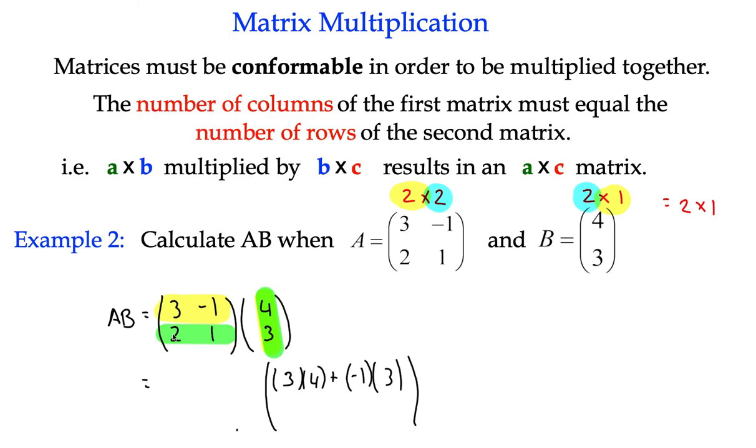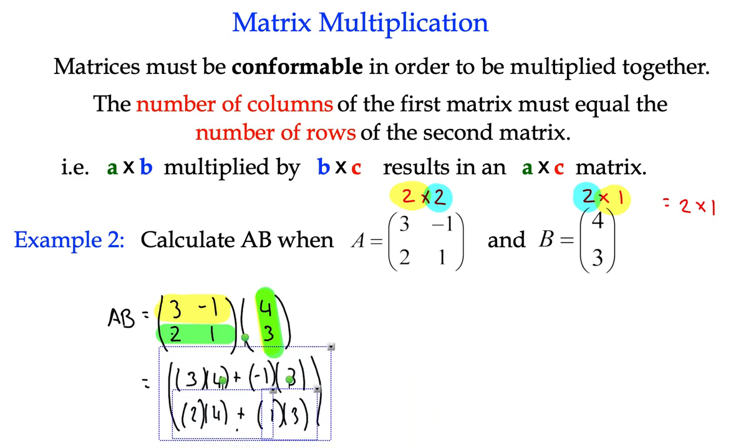So in other words, we're going to use 2 and 4, the first elements in each of those. We're going to do 2 times 4. And we're going to add to that, we always add 1 and 3, which are the second in each row and column. So that gives us the calculation that we're going to do to get each of the elements.